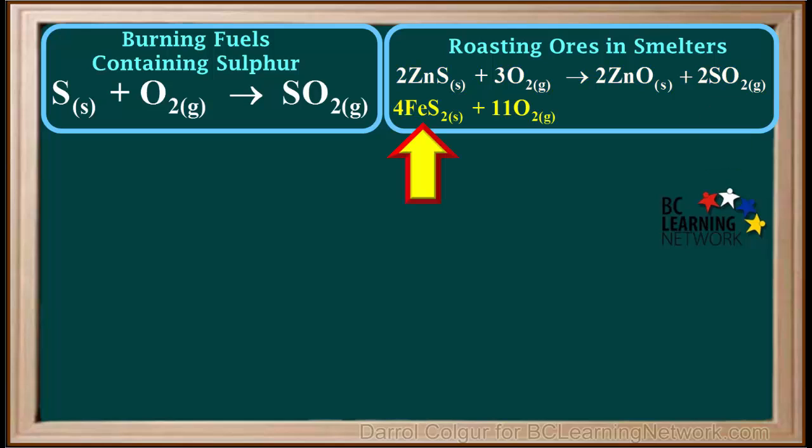Similarly, a common iron ore, iron disulfide or iron pyrite, is heated in oxygen to produce iron(III) oxide or Fe2O3 and SO2.